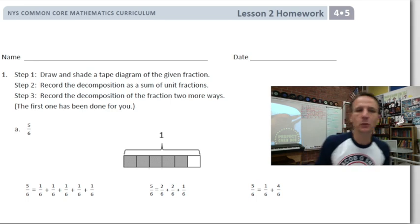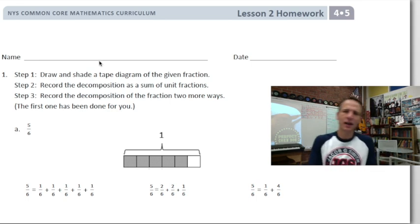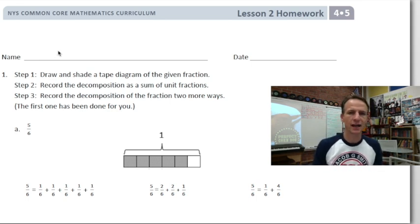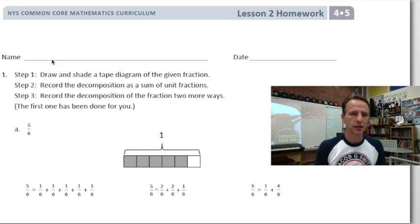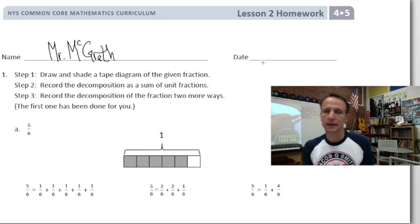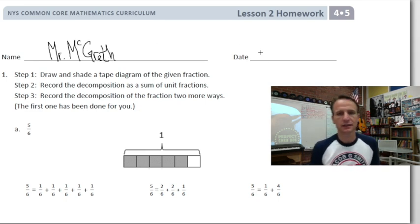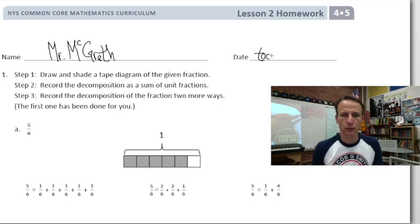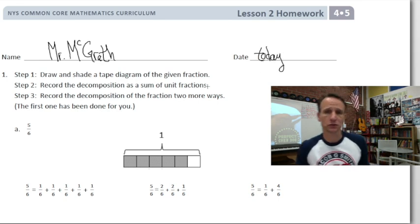It's homework time. Here we are again — lesson two of module five. Let's start out in the proper way: jot your name down at the top. I like it when my students put both first and last name — shows a degree of diligence. Go ahead and do so, and then let's put today's date.